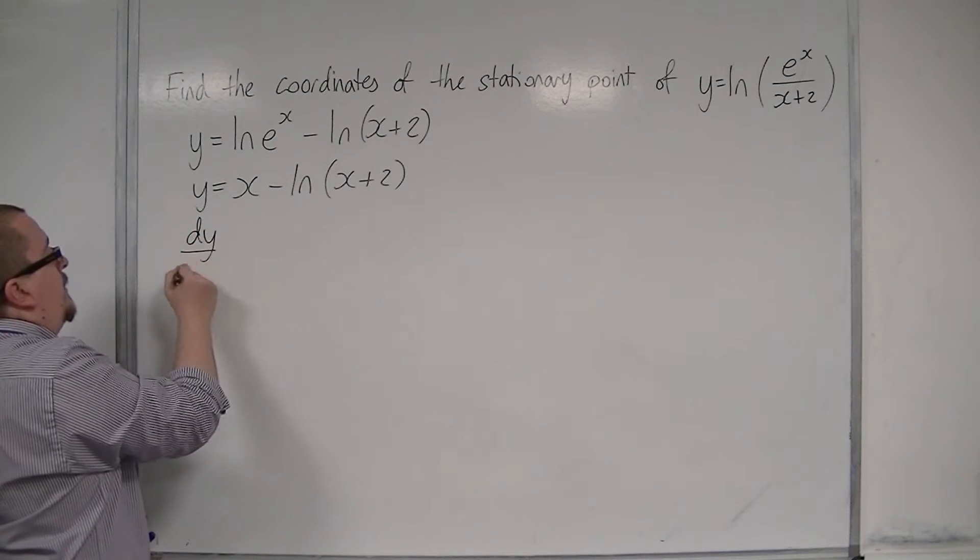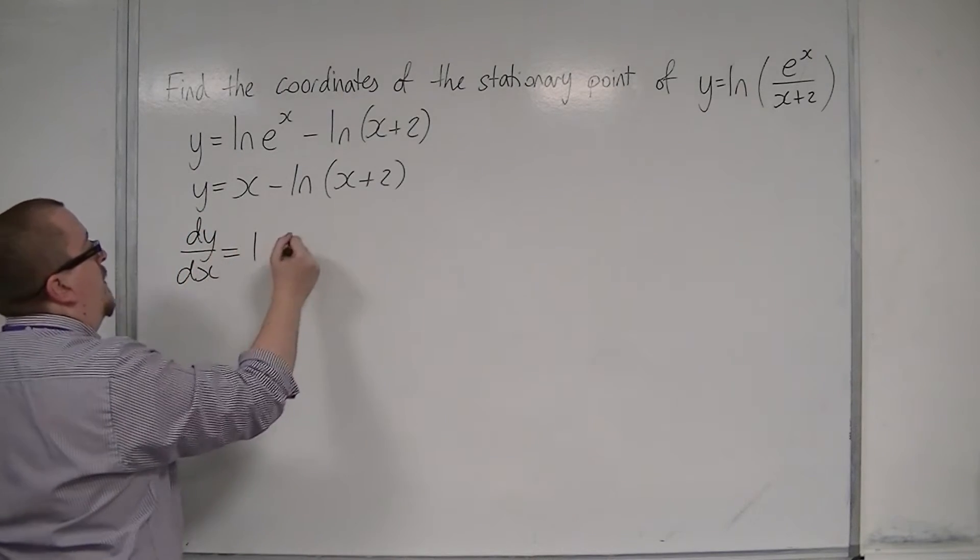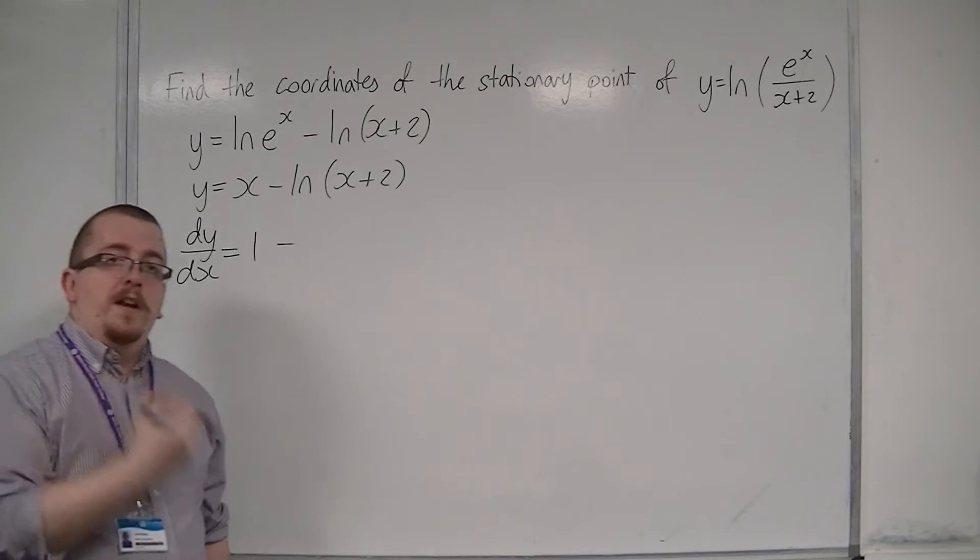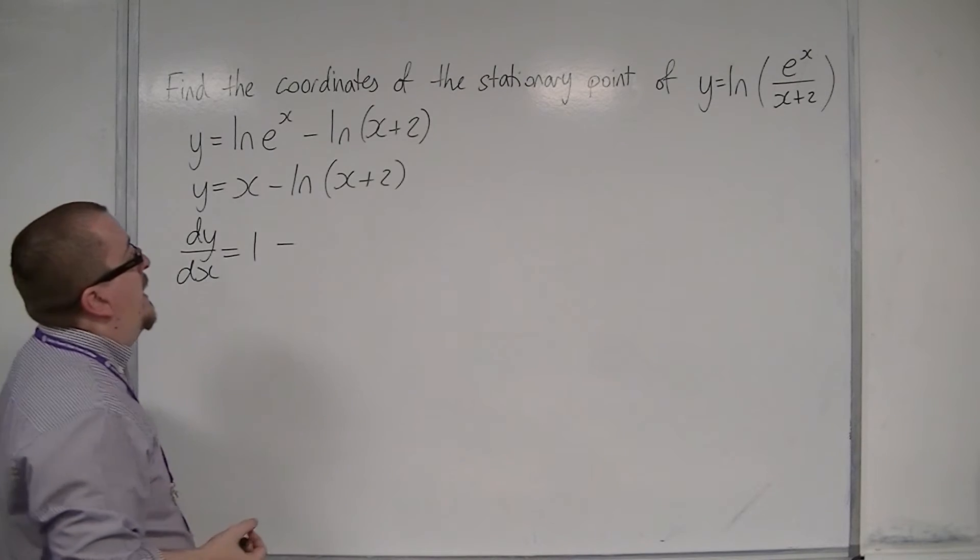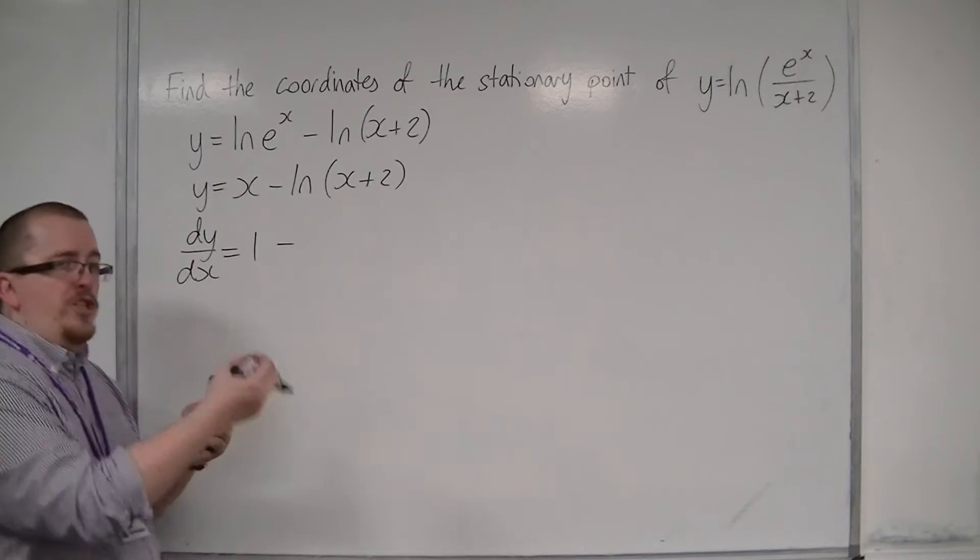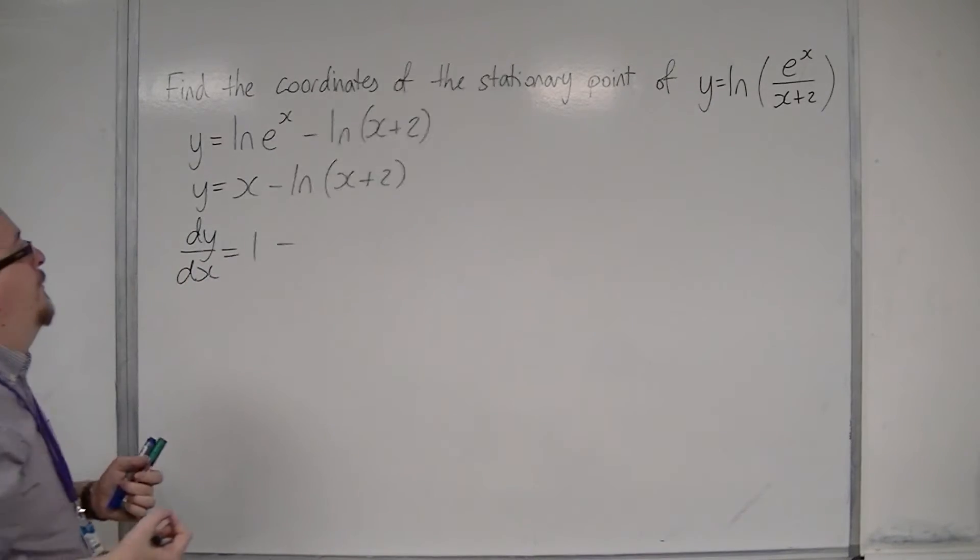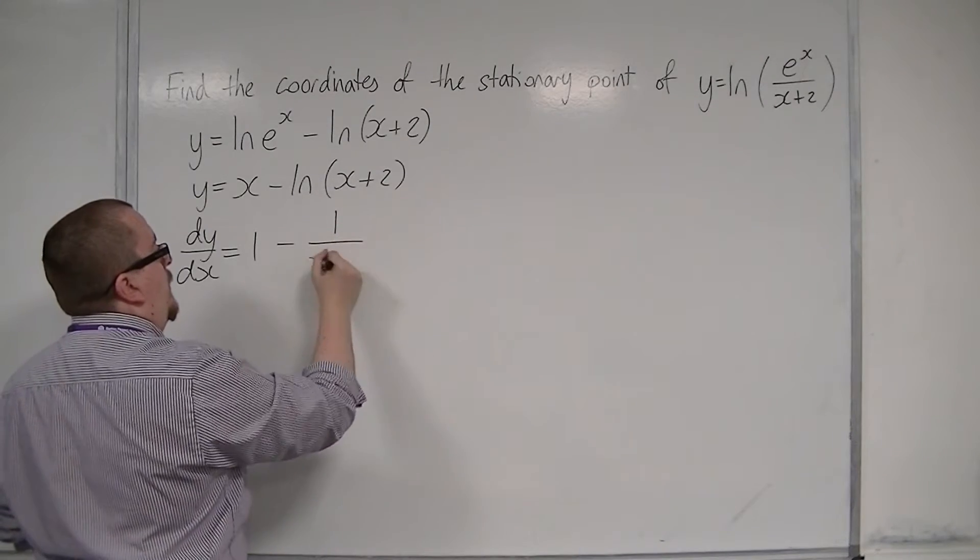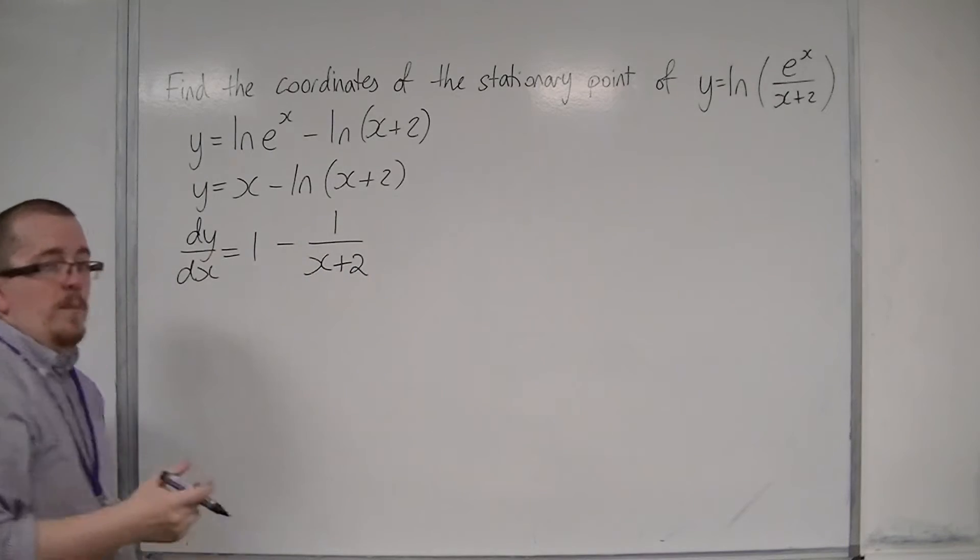So, dy by dx will be 1 take away, now the derivative of log of x plus 2. We learnt a very neat trick earlier where we had log of f of x differentiates to f prime over f. So, the derivative of x plus 2 is 1 and so that's on the numerator and the x plus 2 is in the denominator.